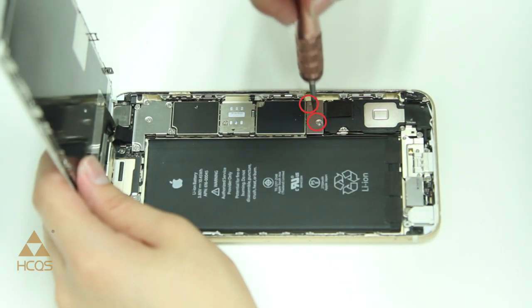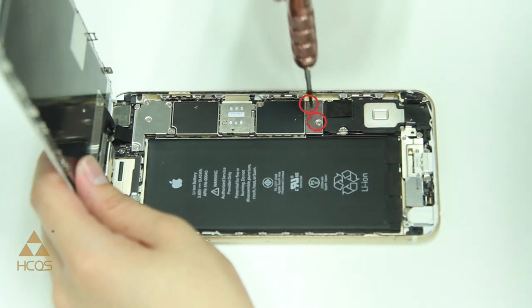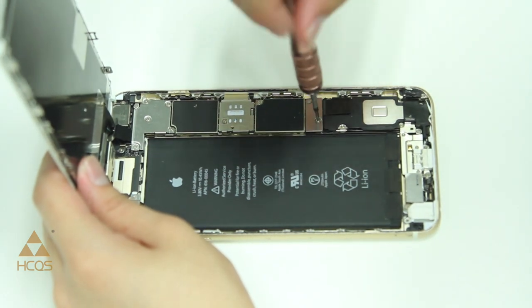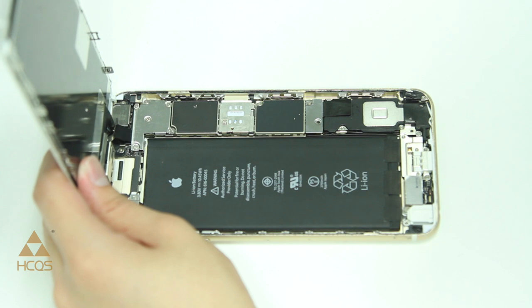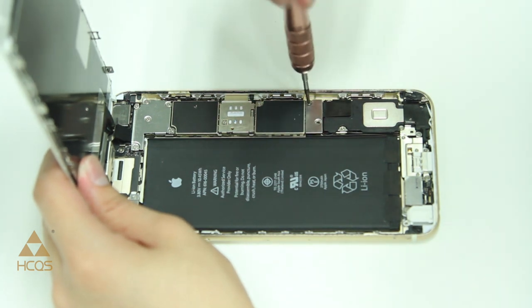Now I recommend that you disconnect your battery. There are two screws down here in a panel that will allow you to access the battery terminal and disconnect the battery from the phone. This is always the best practice when performing a repair.